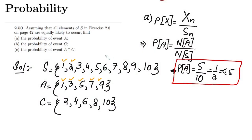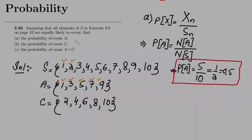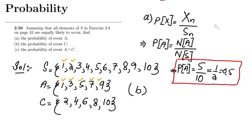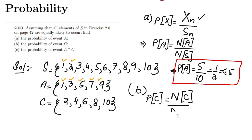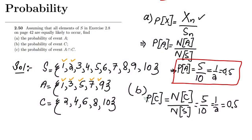Similarly, in order to find the probability of C, I use the same formula. The probability of C equals the number of elements in C divided by the number of elements in S. The number of elements in C are 1, 2, 3, 4, 5 — again five. The number of elements in S are 10. So it is again 5 over 10, which is 0.5. That is the answer of part C.